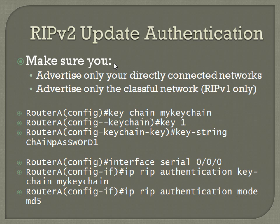To set up the keychain configuration, the command is 'key chain' followed by whatever you want to name the keychain — in this case, 'my-keychain'. That jumps you into keychain configuration mode. Then enter 'key 1', which jumps you into keychain key configuration mode — you can see that by the difference in the prompt. Then it's 'key-string' followed by whatever you want the password to be, in this case 'chain-password-one' with alternating upper and lowercase letters.